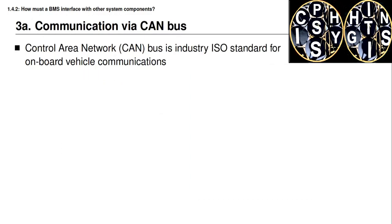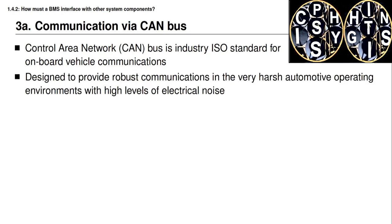Let's first think about how the BMS communicates with a host application. A very common approach used in many applications is the control area network or CAN bus, which is an industry standard way of communicating. In the automotive application it's the universal way of communicating between electronic components in the vehicle. The CAN bus specification is designed to provide robust communications between two processors in a very demanding and harsh automotive environment where there are high levels of electrical noise.